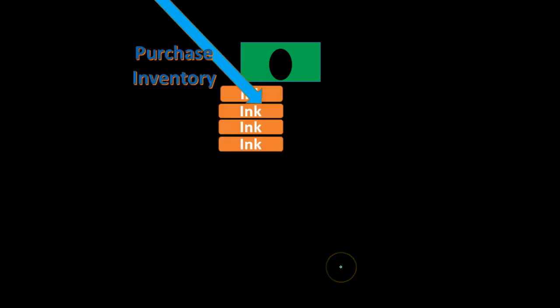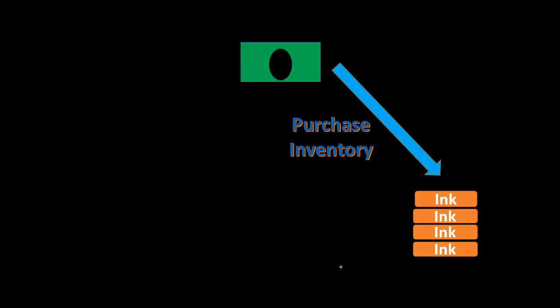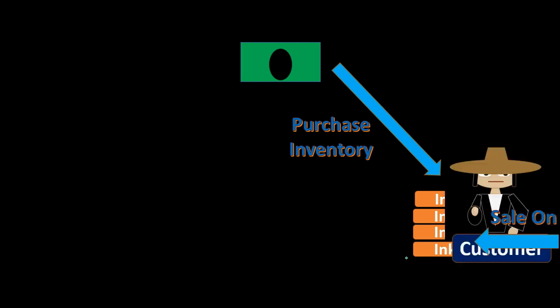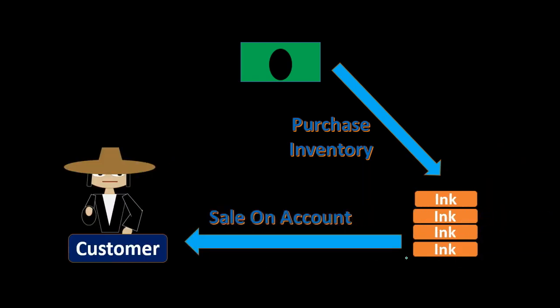The cycle will look something like this. First, we're going to be purchasing inventory. Inventory could be anything that we purchase for the purpose of reselling in order to generate revenue. Once we have the inventory, at some point in the future, we will hope to sell that inventory to a customer.